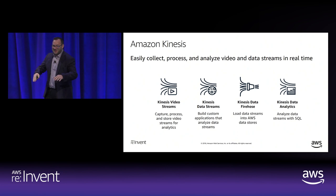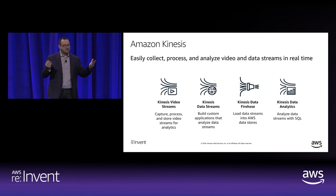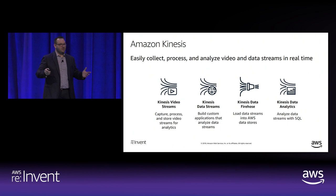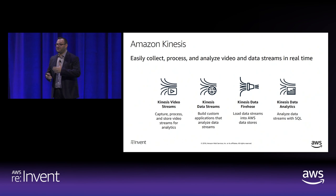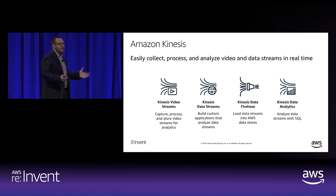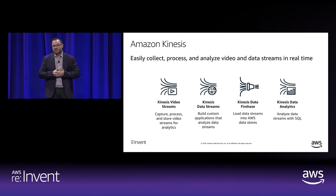Every traffic event in your account — creating an EC2 instance, bringing it down, data transfer — is captured by Kinesis for metering. Kinesis has four core services today: Kinesis Video Streams (for IP-based cameras and computer vision applications), Kinesis Data Streams, Kinesis Data Firehose, and Kinesis Data Analytics. We're focusing today on the Kinesis data stack.